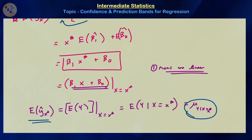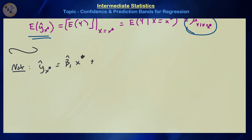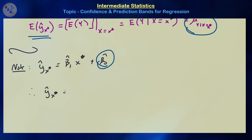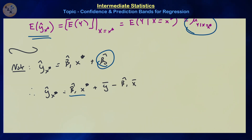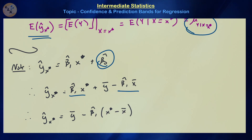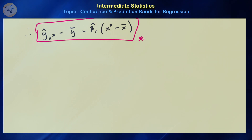A quick note on the representation of ŷ(x*). We have ŷ(x*) = β̂₁x* + β̂₀. Since β̂₀ = ȳ − β̂₁x̄, we can write ŷ(x*) = β̂₁x* + ȳ − β̂₁x̄, which simplifies to ŷ(x*) = ȳ + β̂₁(x* − x̄). This alternative representation is sometimes useful for proving theorems about ŷ(x*).